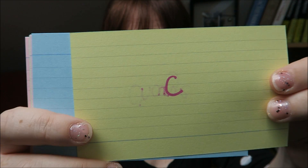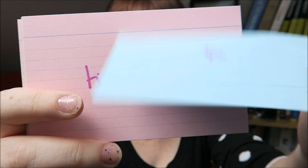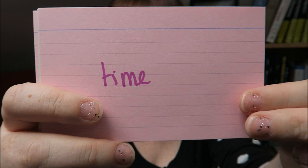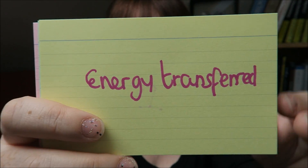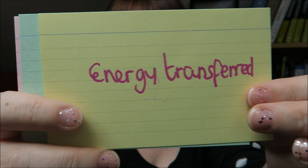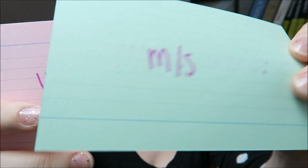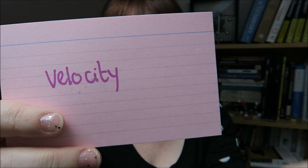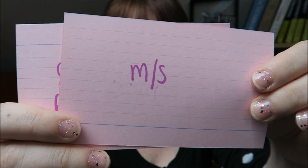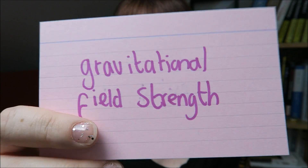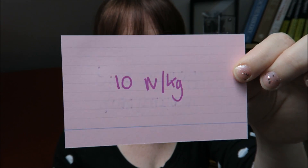Charge? Coulombs. Current? Amps. Time? Seconds. Energy transferred? Joules. Initial velocity? Meters per second. Velocity? Meters per second. And gravitational field strength? 10 Newtons per kilogram.